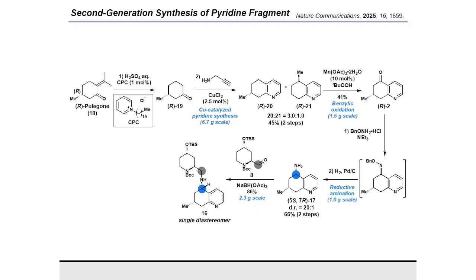Therefore, we decided to explore a different route to the chiral amine. A second-generation synthesis was commenced with a retro-aldol reaction on α-pulegone under aqueous acidic conditions, which afforded (R)-3-methylcyclohexanone. This chiral ketone was subjected to a copper-catalyzed pyridine synthesis with propargylamine to obtain a mixture of products 20 and 21 in a 3:1 ratio. Chemocatalytic benzylic oxidation of compound 20 using manganese acetate in the presence of tert-butyl hydroperoxide provided the desired pyridyl ketone in 41%. Oxime formation with O-benzoyl hydroxylamine and subsequent hydrogenation gave the desired chiral amine in 66% with a dr of 20:1 on gram scale.